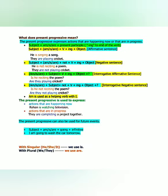Now let us know what present progressive means. Present progressive also means present continuous tense. The present progressive or present continuous expresses actions that are happening now or that are in progress. Where can we use present progressive sentences? Actions happening now - like 'Rohan is watching television.' And to express actions that are in progress, meaning still continuing - like 'They are completing a project together.'